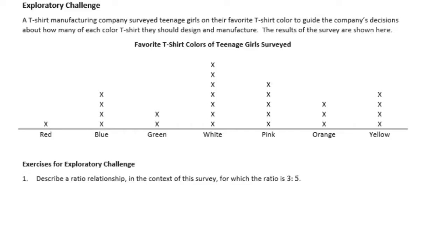The results of the survey are shown here. This is a line plot that shows how many girls prefer red, blue, green, white, pink, orange, or yellow t-shirts. Number one: describe a ratio relationship in the context of this survey for which the ratio is 3 to 5.